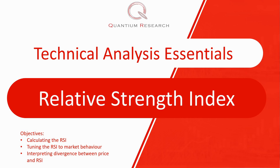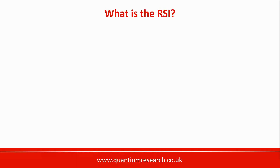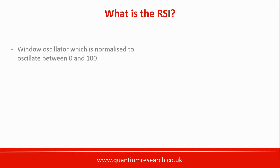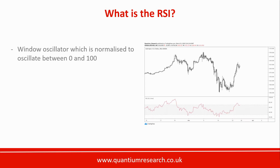So what is the RSI? It is a window oscillator, meaning it has its own separate window rather than being overlaid in the same window as price, and it is normalized to oscillate between zero and 100. It is bounded between those two values, so it can't go above 100 or below zero.